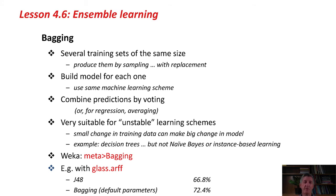Bagging is very suitable for learning schemes that are called unstable — ones where a small change in the training data can make a big change in the model. Decision trees are a really good example: a tiny change in the training data can produce a completely different decision tree. Whereas with Naive Bayes, small changes in the training set aren't going to make much difference. That's a stable machine learning method.